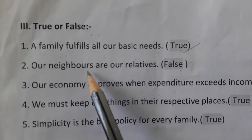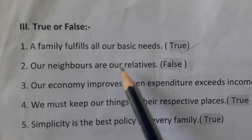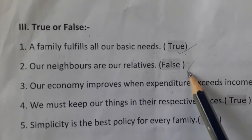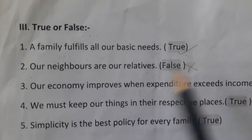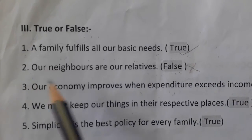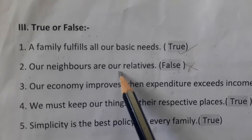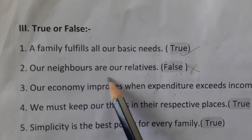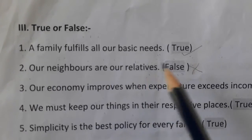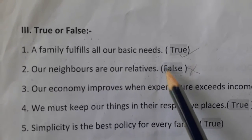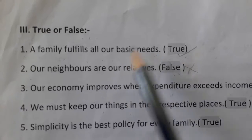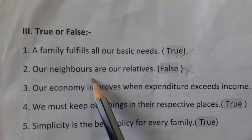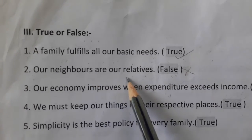Second one: our neighbors are our relatives. The answer is false. Because our neighbors are not our relatives — our neighbors are our neighbors only, not relatives. They don't have any connectivity with our relations.